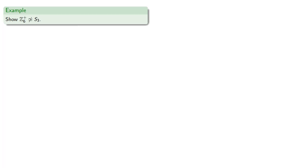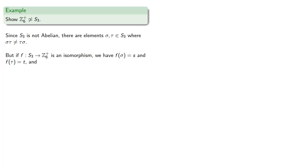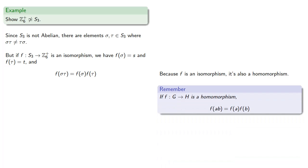For example, let's consider the integers mod 6 under addition and the symmetric group with three elements. Both of these groups have the same number of elements, but we note that S3 is not abelian, so there are elements sigma and tau in S3 where sigma tau is not tau sigma. But if we have an isomorphism F from S3 into Z6, then F of sigma equals S and F of tau equals T. Because F is an isomorphism, it's also a homomorphism, and the fundamental property of a homomorphism is that our function applied to a product is the product of the function values.